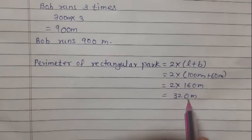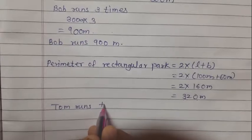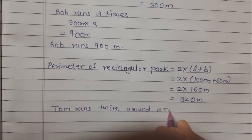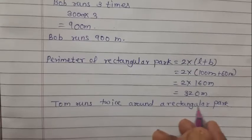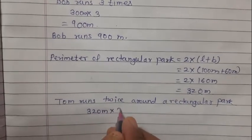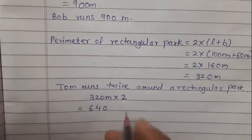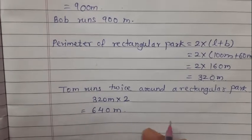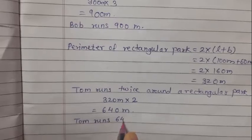Tom runs twice around the rectangular park. The perimeter is 320 meters and Tom runs 2 times. So 320 multiplied by 2: 2 zeros are 0, 2 twos are 4, 2 threes are 6. So Tom runs 640 meters.